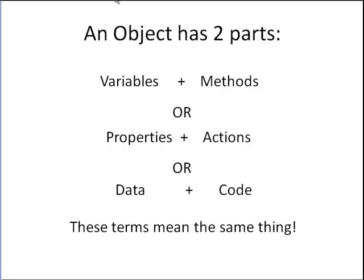Part of the problem in learning any new programming topic is that different terms are often used to describe the same thing. I prefer the terms variables and methods to describe what is in an object. Others use the terms properties